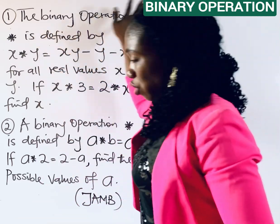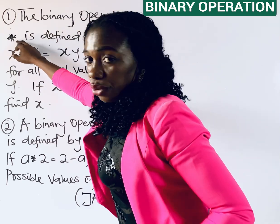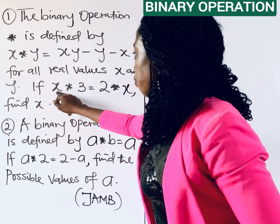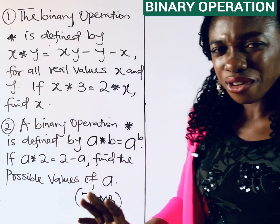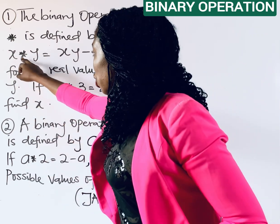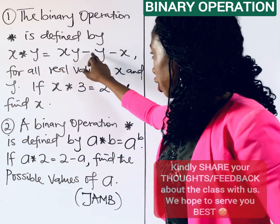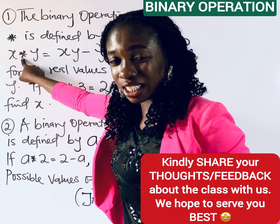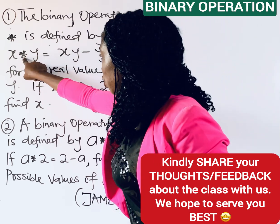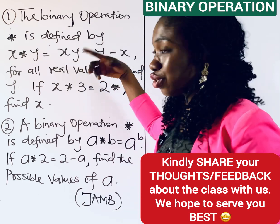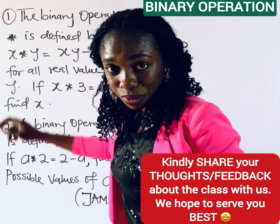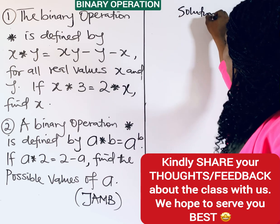We are beginning with question one. We are told the binary operation is defined by x operation y for all real values of x and y. If x operation 3 equals 2 operation x, find x. Remember, binary operations are always defined using arithmetic operations — you always use the defined operation, not addition, subtraction, or multiplication directly.